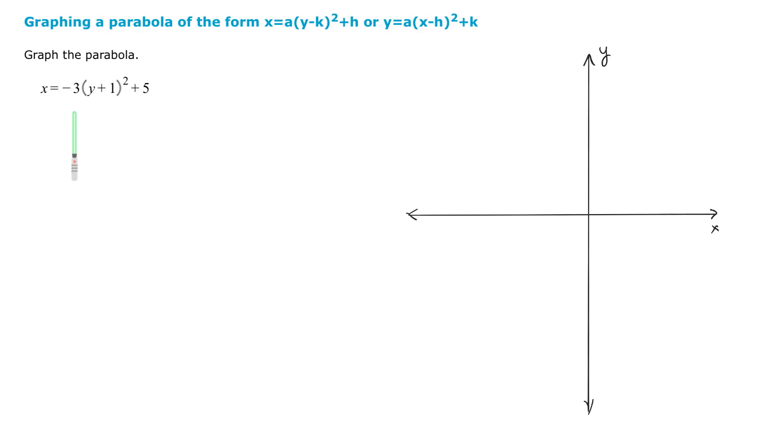So in this form here, since we have a negative 3 and you have a y squared, you actually know this parabola is going to open to the left. So it looks something like this.